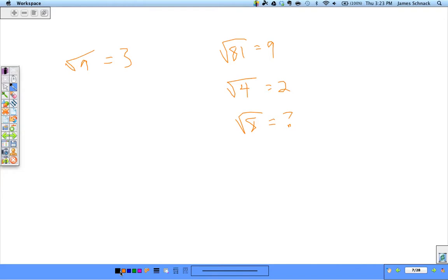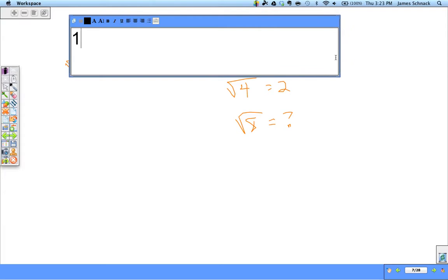We have a list of perfect squares, and that list of perfect squares goes something like this. 1 squared is 1, 2 squared is 4, 3 squared is 9, 16 is 4 squared, 5 squared is 25. Pause the video, fill out the rest of this list until you hit 15 squared.